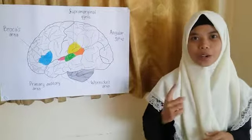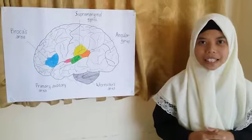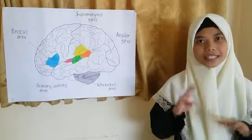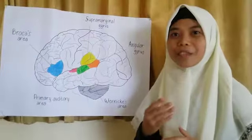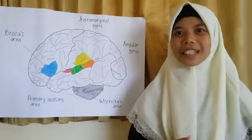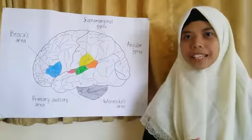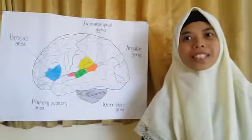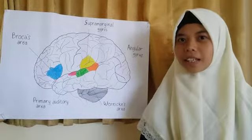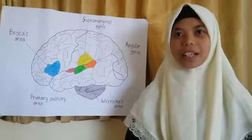Wernicke's area is one of two parts of the cerebral cortex related to speech since the late 19th century. It is involved in the understanding of written and spoken language. It is traditionally considered to consist of the posterior section of the superior temporal gyrus, namely STG, in the dominant cerebral hemisphere.